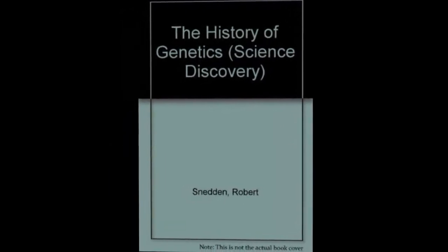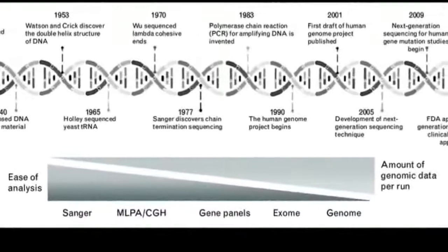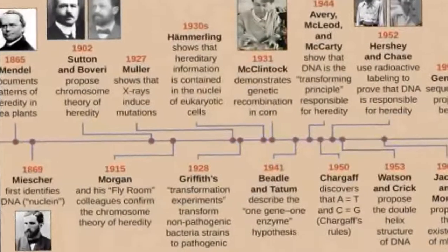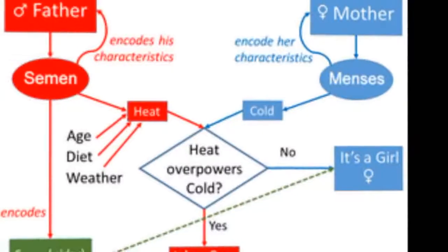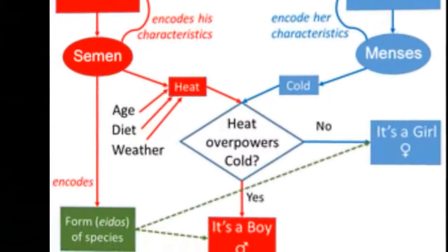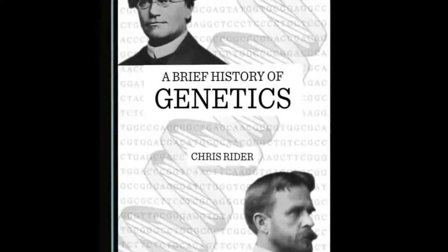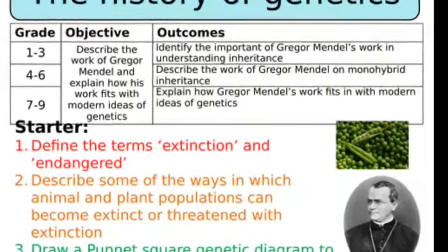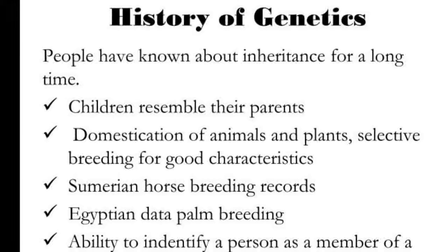In 1952, Rosalind Franklin and Raymond Gosling produced a strikingly clear X-ray diffraction pattern indicating a helical form. Using these X-rays and information already known about the chemistry of DNA, James D. Watson and Francis Crick demonstrated the molecular structure of DNA in 1953. Together, these discoveries established the central dogma of molecular biology, which states that proteins are translated from RNA which is transcribed from DNA. This dogma has since been shown to have exceptions, such as reverse transcription in retroviruses.